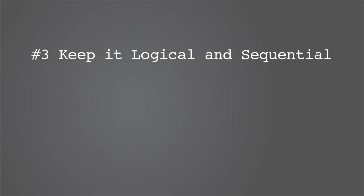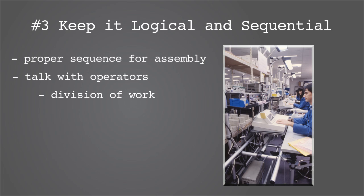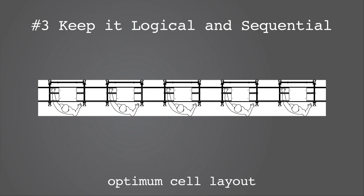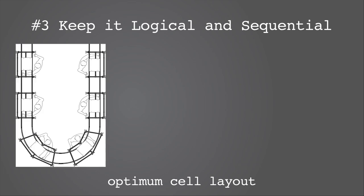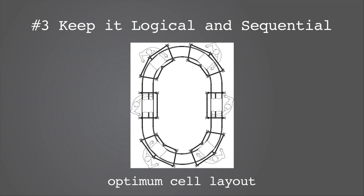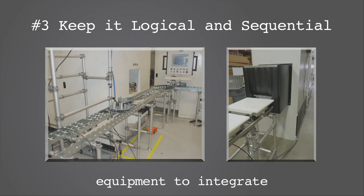Keep it logical and sequential. What is the proper sequence for assembly? Talk with your operators for input on division of work, tact times, and line balance. Don't make it more difficult than necessary. What is the optimum cell layout — straight line, U-shaped, L-shaped, or oval? What equipment or sub-assembly needs to be integrated?